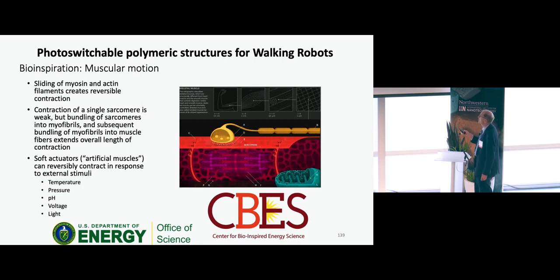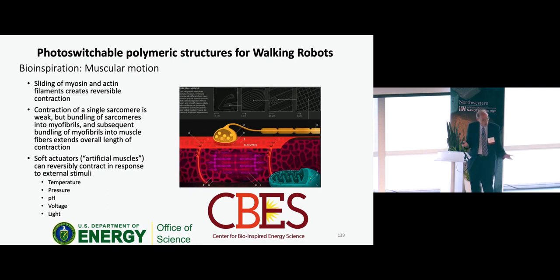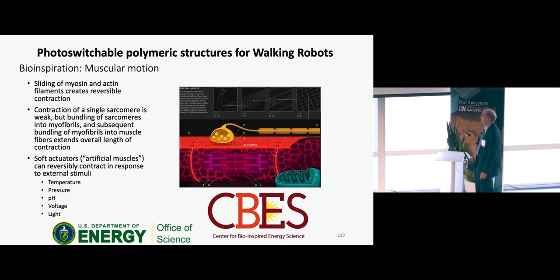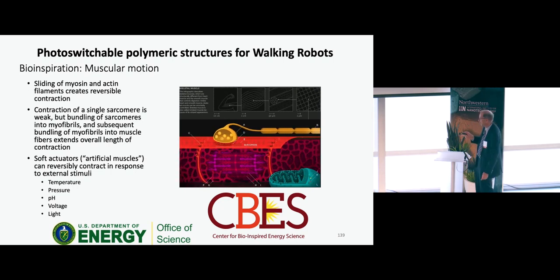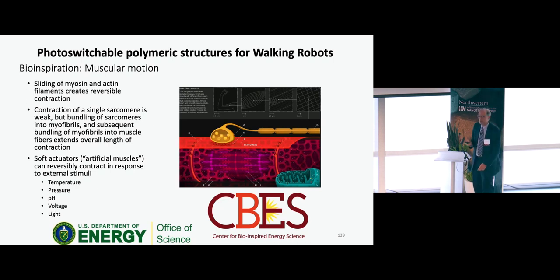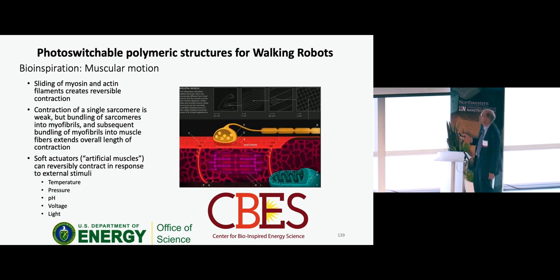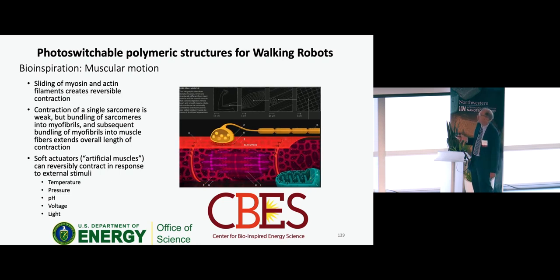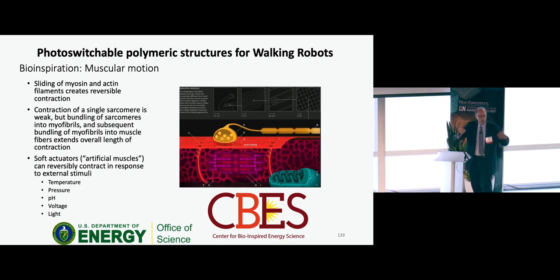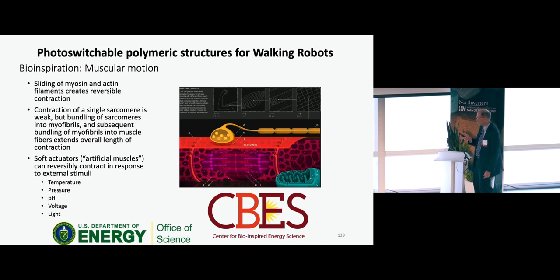Here is an image of basically a muscle. A muscle is a complicated structure—it consists of myosin and actin filaments that rub against one another, with hydrogen bonds involved. Within one cell, you bundle many of these sarcomeres into myofibrils, and then bundle those into the overall muscle. It's a hierarchy of different steps involved in the biological system.